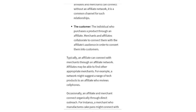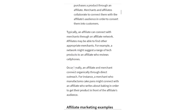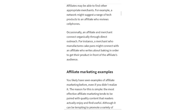Typically, an affiliate can connect with merchants through an affiliate network, which may suggest a range of relevant products — for example, a network might suggest tech products to an affiliate who reviews cell phones. Occasionally, an affiliate and merchant connect organically through direct outreach. For instance, a merchant who manufactures cake pens might connect with an affiliate who writes about baking in order to get their product in front of the affiliate's audience.